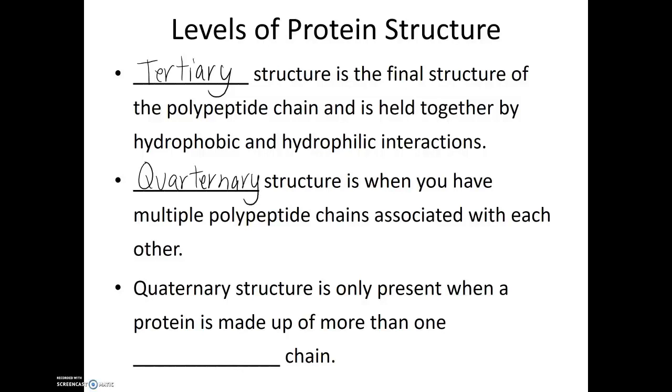Which is known as quaternary structure. Quaternary structure is when you have multiple polypeptide chains associated with each other. Quaternary structure is only present when a protein is made up of more than one polypeptide chain.